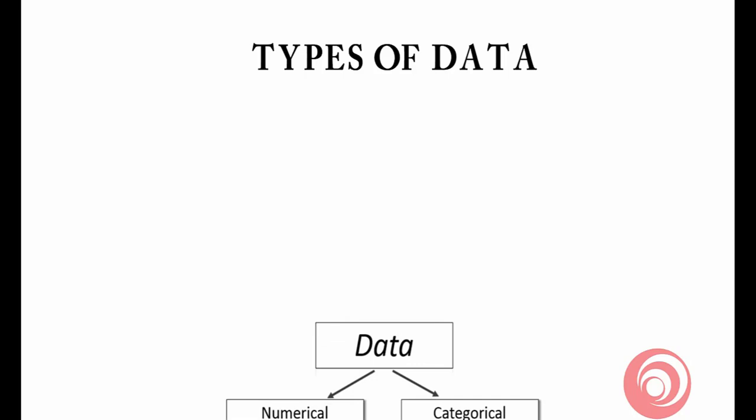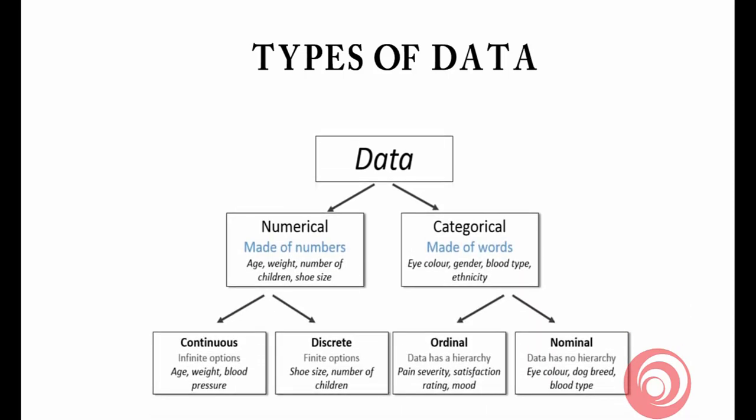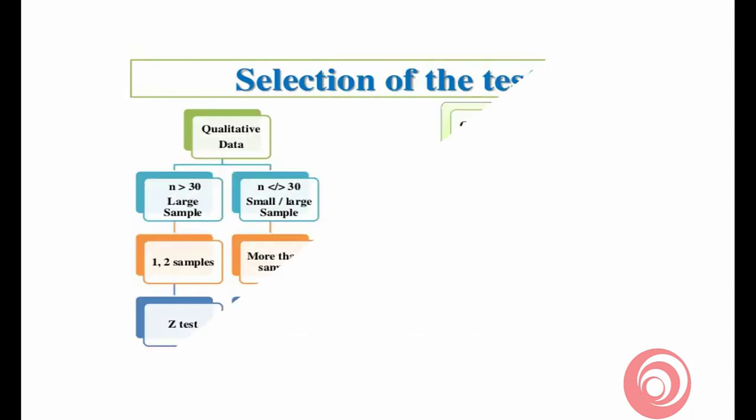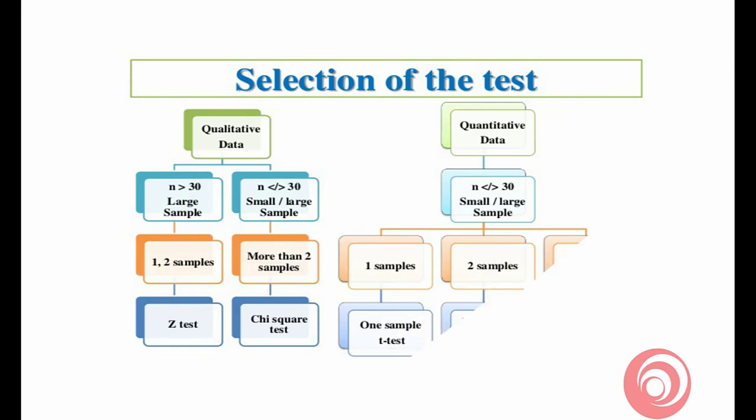Types of data: basically there are two types — numerical data and categorical data. Numerical data is made up of numbers such as age, weight, etc., and is further divided into continuous and discrete data. Categorical data is further divided into ordinal and nominal — nominal is the name of anything, and ordinal is the rank or statement.